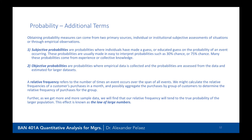Objective probabilities, however, are assessed from empirical data — estimated from a larger data set. We collect data and calculate what these probabilities are in order to make assessments. Relative frequency refers to the number of times an event occurs over the span of all events. We might calculate relative frequencies of customer purchases in a month, aggregating across customer groups to determine the relative frequency for the group. As we collect more sample data, our relative frequencies will tend toward the true probability of the larger population. This effect is known as the law of large numbers.